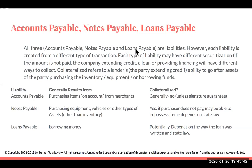All three — accounts payable, notes payable, and loans payable — are liabilities, meaning they have to be repaid. However, each one of these liabilities is created from a different type of transaction, and each type of liability may have a different securitization, or collateralization. If the amount is not paid, the company extending credit will have different ways to collect.